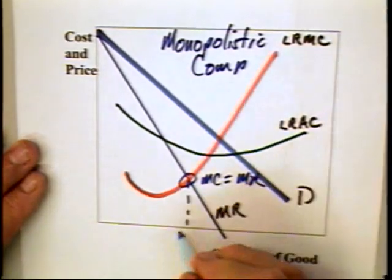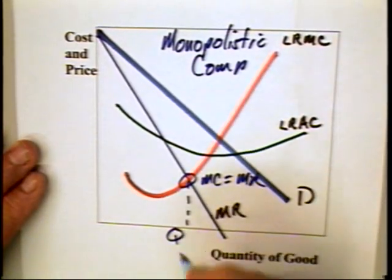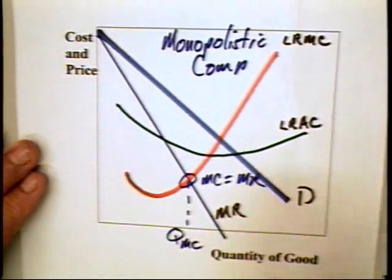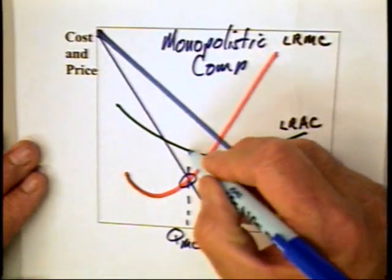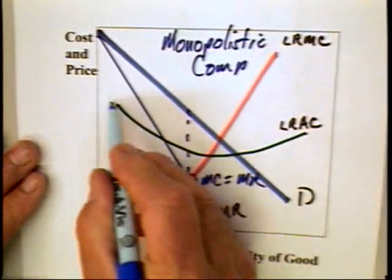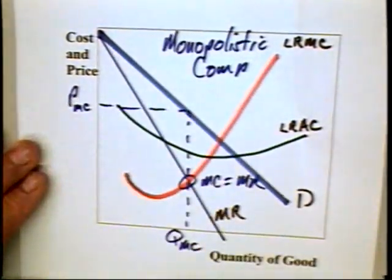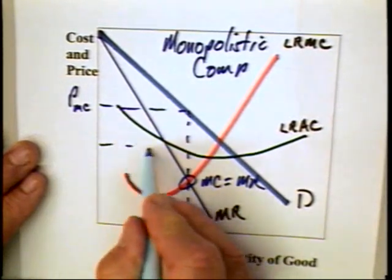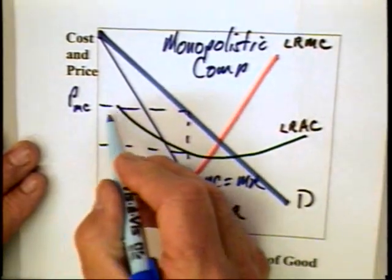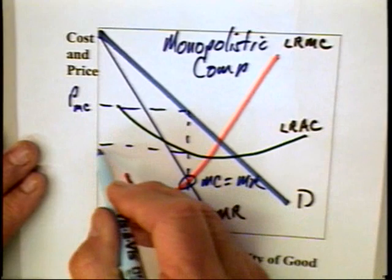And as a consequence, it will produce a quantity Q, we'll call that QMC. It can sell this quantity for a price of PMC. And the result is that this competitor can make profits equal to this box here.